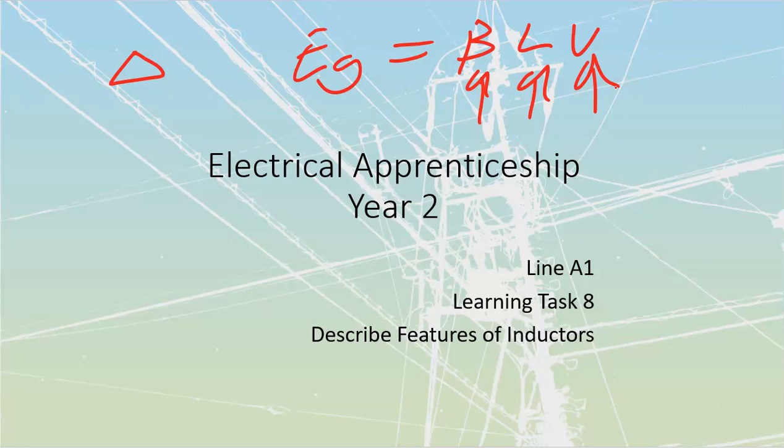This is ultimately all going to be called electromagnetic induction, where we're using magnetism and converting it into electricity. This is another one of our fundamental universal laws — that energy cannot be created or destroyed; it can only change form.